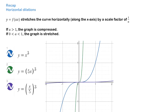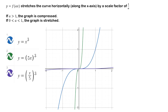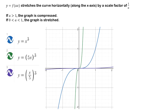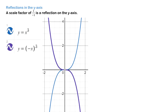To recap: y equals f(ax) stretches the curve horizontally along the x-axis by a scale factor of 1 over a. If a is greater than 1, the graph is compressed. If a is between 0 and 1, the graph is stretched. For reflections in the y-axis: if you have a negative value of a, there is a reflection on the y-axis.